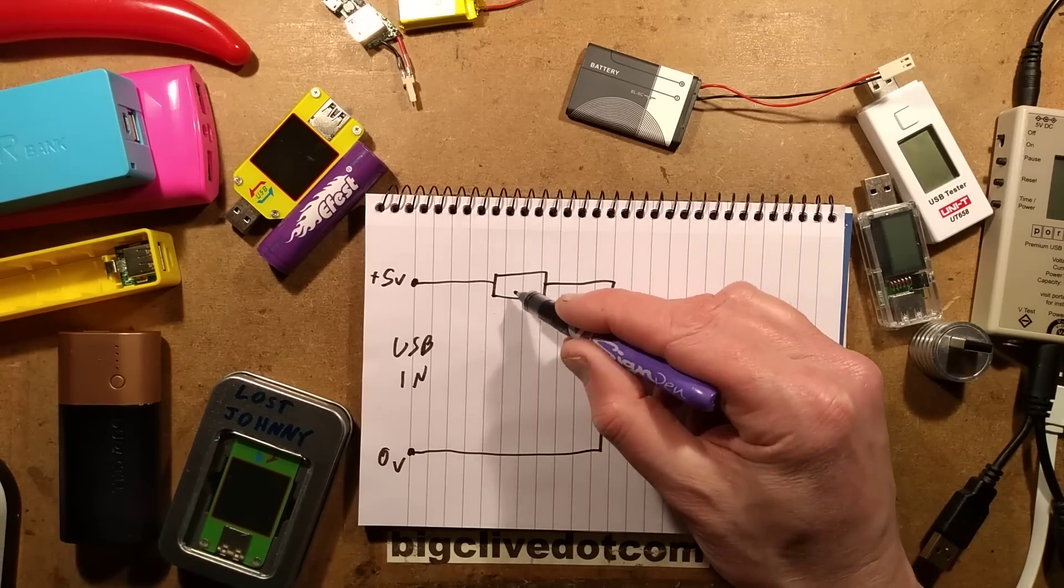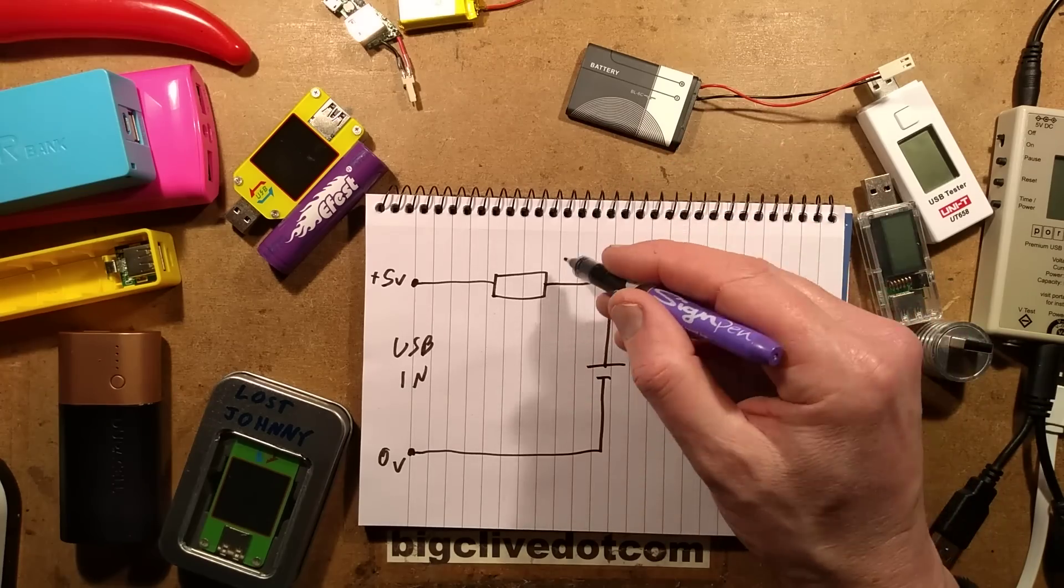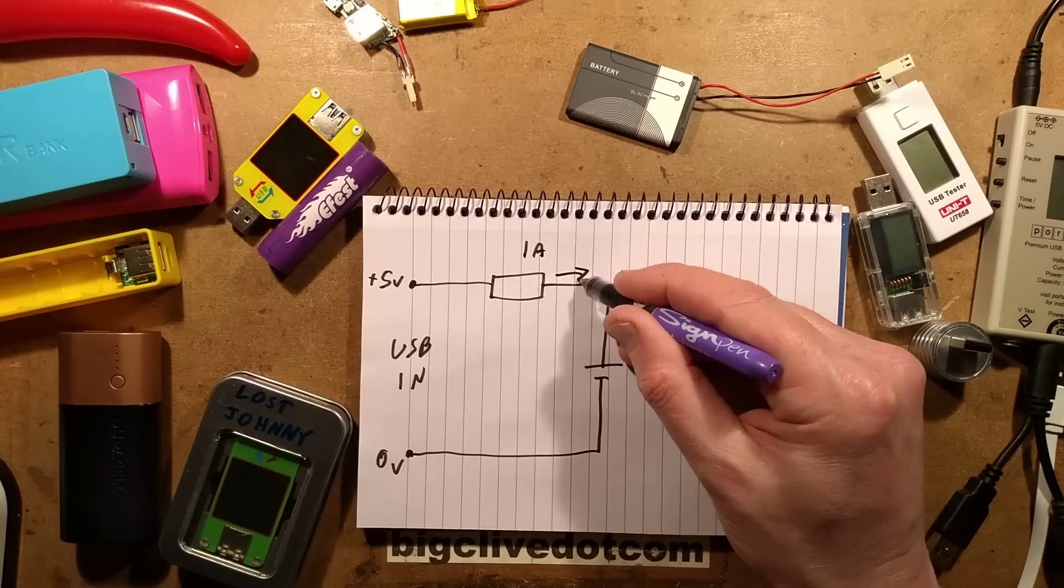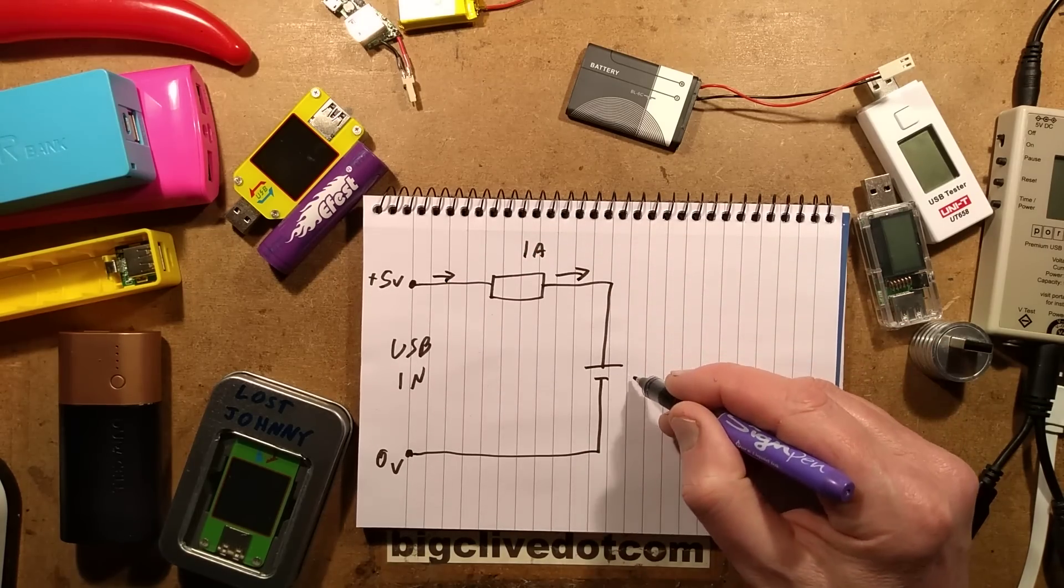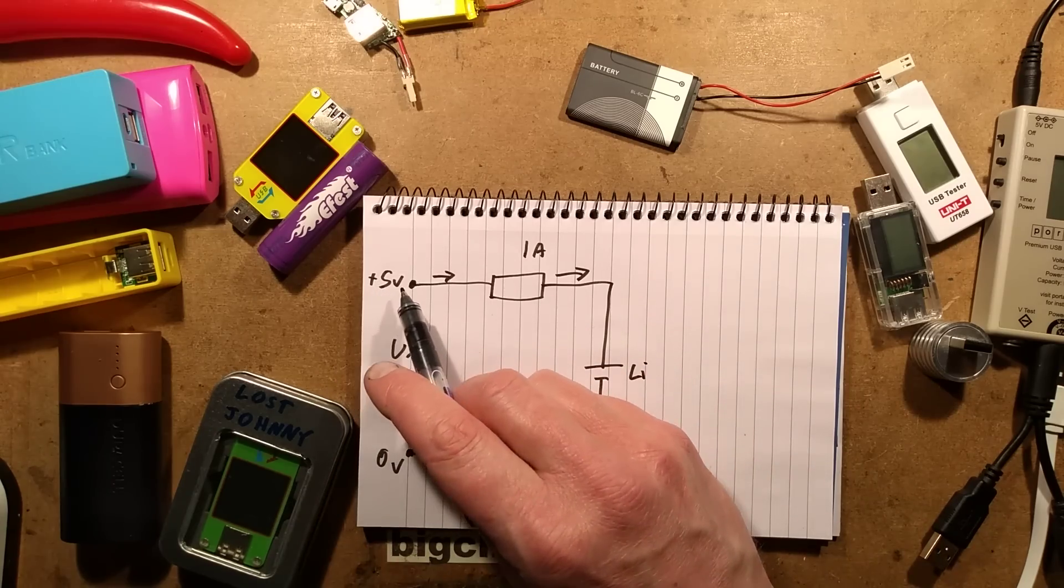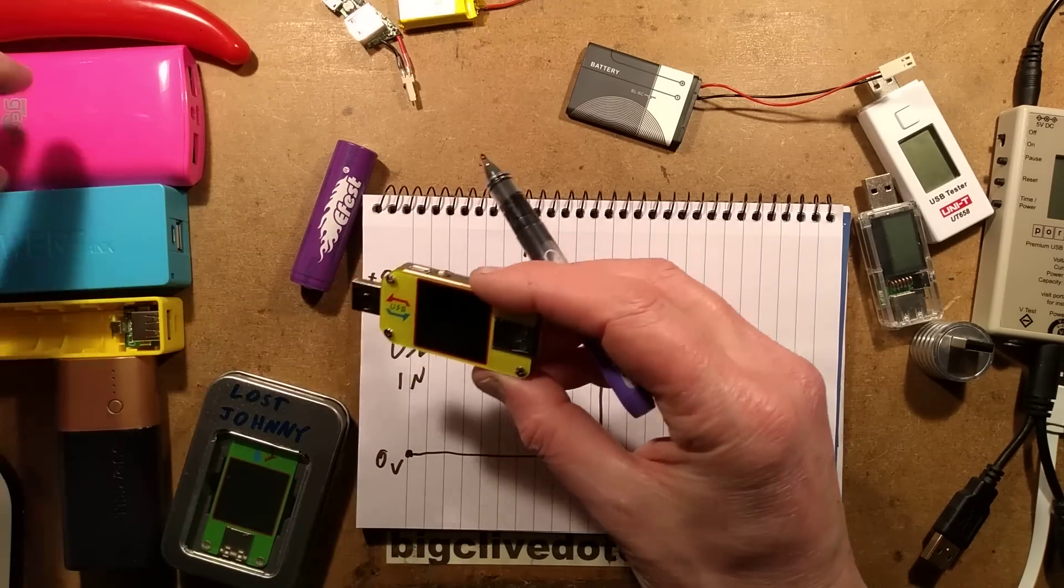What the circuitry does is it effectively acts like a current limiter. Say for instance it's going to charge at 1 amp, then the current flowing through the whole circuit will be 1 amp. So the current flowing into the lithium cell will be 1 amp, and the current flowing from the USB power supply will be 1 amp. That's what the unit will show up when you plug it in.